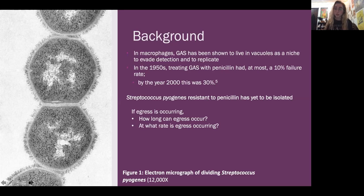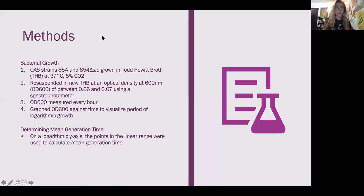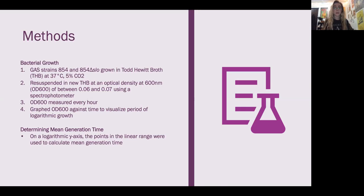If egress is occurring, how long can egress occur? At what rate is egress occurring? I address these questions by first setting up a growth curve of group A strep strains 854 and a mutant. They were grown in Todd Hewitt broth at 37 degrees Celsius, 5% CO2. They were resuspended in new THB at an optical density measured in a spectrophotometer set to 600 nanometers.